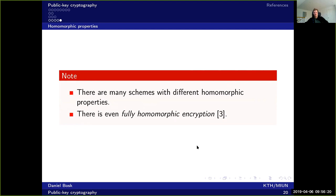Basically any homomorphism you would like is probably available. There is even what's called fully homomorphic encryption, which allows you to do any type of homomorphisms and combinations of homomorphisms - so you can do anything with fully homomorphic encryption. However, at the moment the best known algorithms for doing this are rather slow in practice, so you don't want to base your system on that just yet - maybe in a few years.